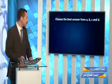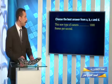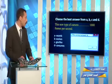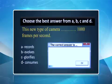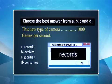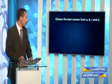Next question: this new type of camera blank 1000 frames per second. Does this camera record, evolve, glorify, or consume? Of course the answer is records. So this new type of camera records, or captures, 1000 frames per second.